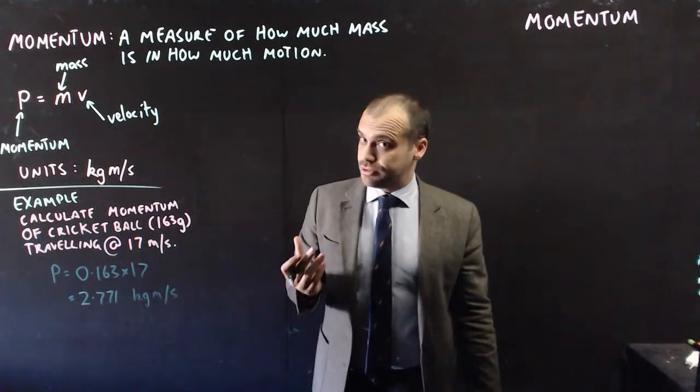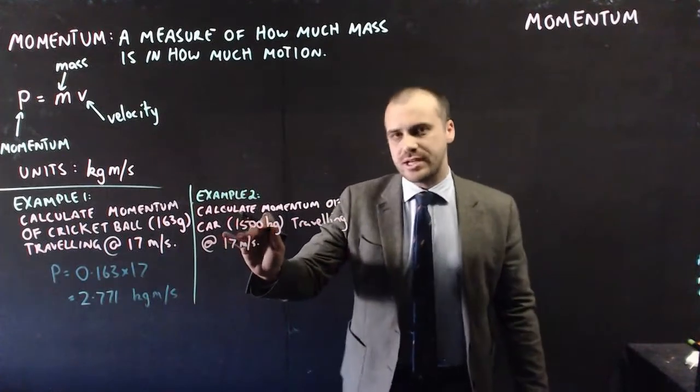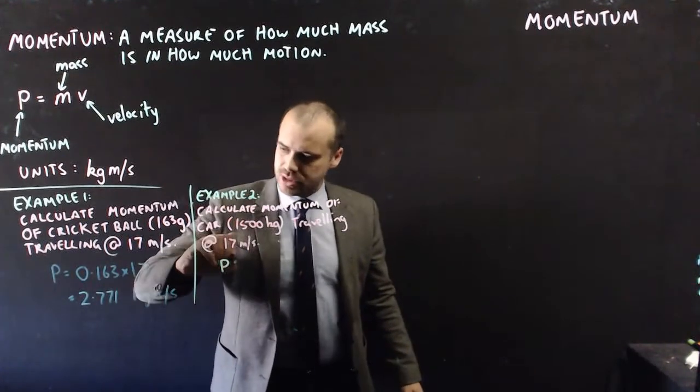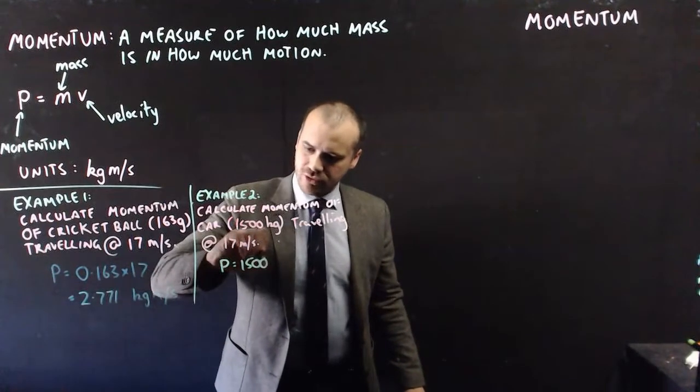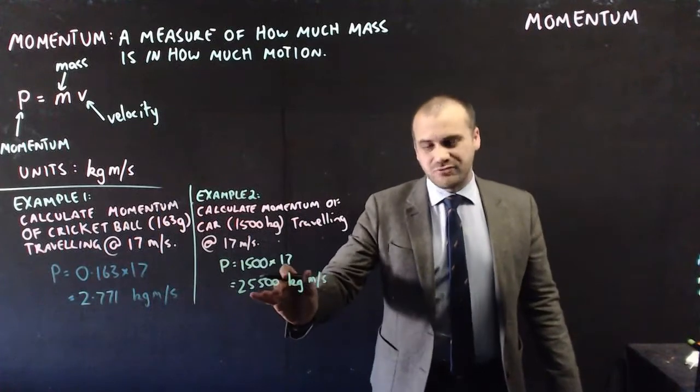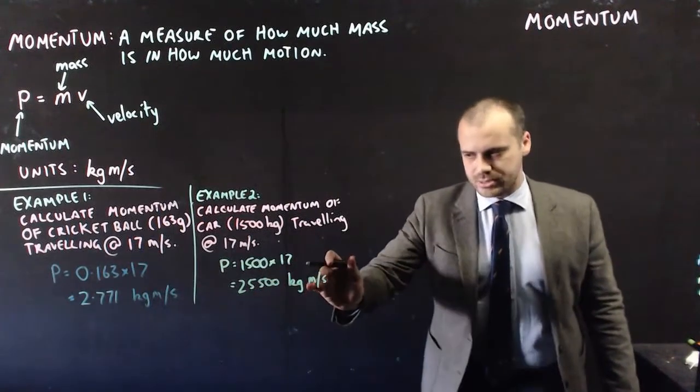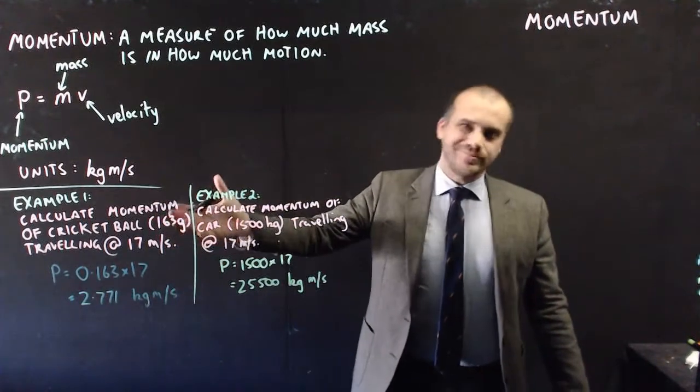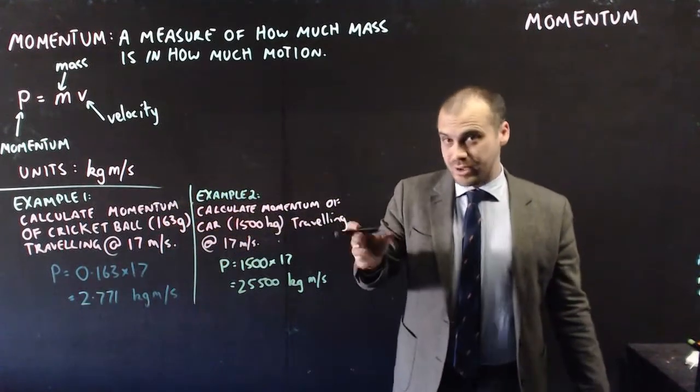But if it was something different, and it was a car weighing 1,500 kilograms traveling at the same speed, its momentum would be 1,500 times 17: 25,500 kilogram meters per second. A cricket ball, not so bad. A car, big problems.